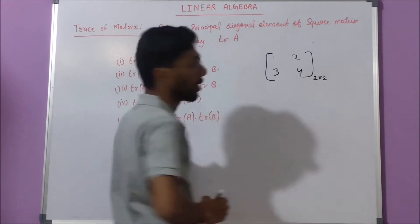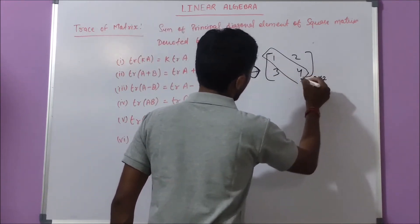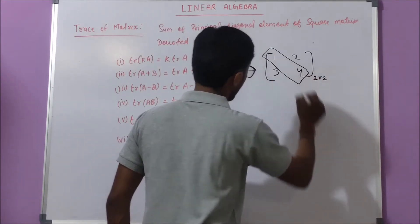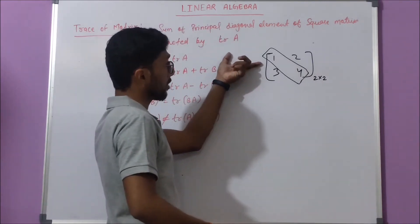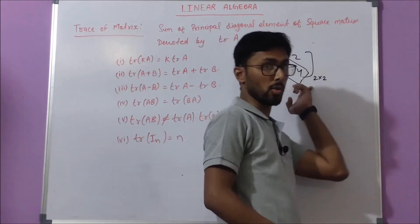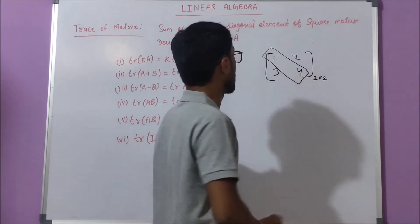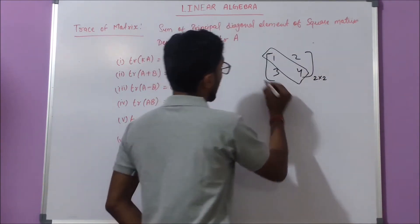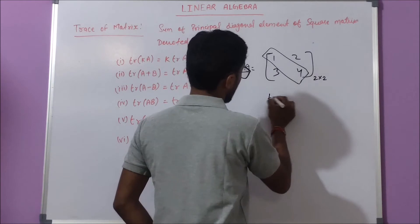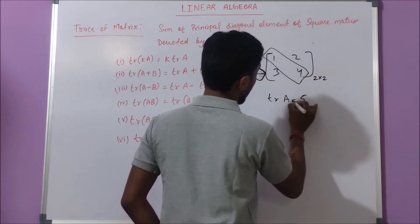The principal diagonal of this square matrix is the line joining from the first element of the first row to the last element of the last row. This is the principal diagonal, and for matrix A, tr(A) is 5. This is how we find the trace of a matrix.